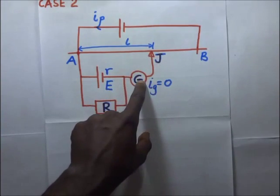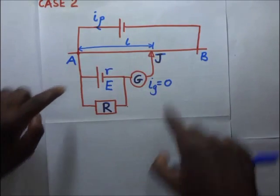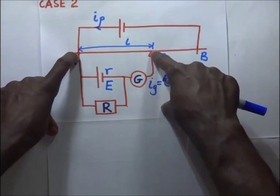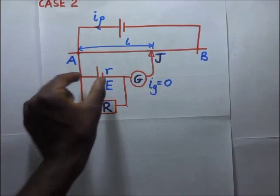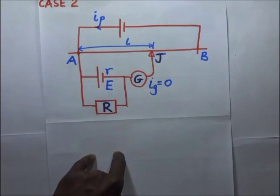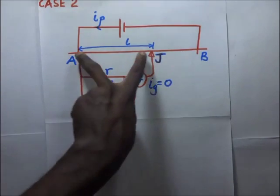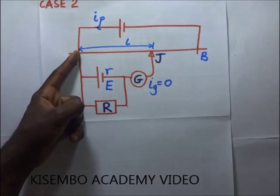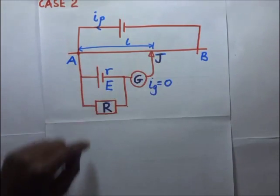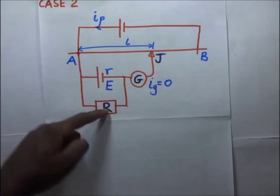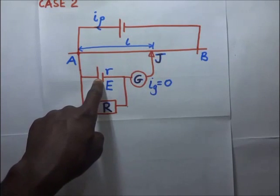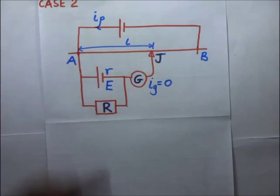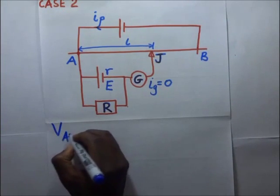When we obtain the balance position and no current is flowing, there is no power being dissipated. The potential difference across the portion of the slide wire between A and the null position equals the potential difference across whatever components are in the secondary circuit. In a secondary circuit with a resistor and a cell with internal resistance, the potential VAJ also equals the potential across the effective resistance of that combination.